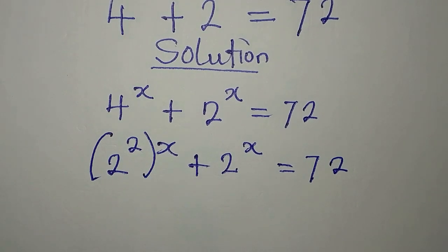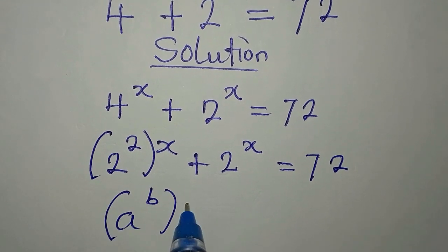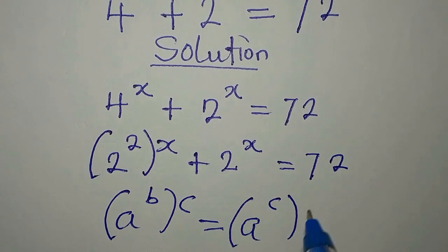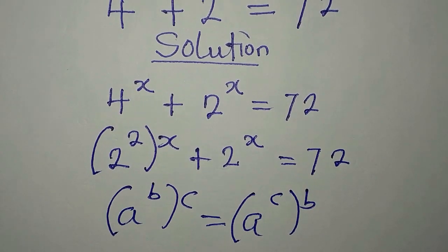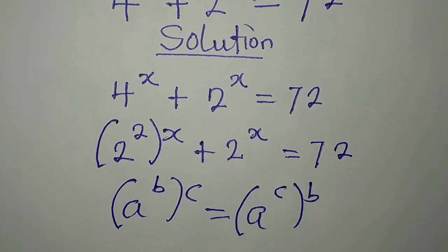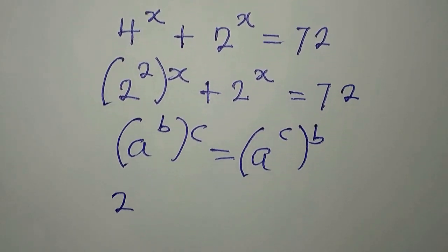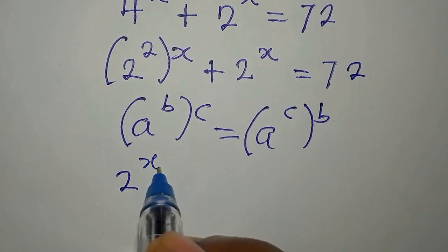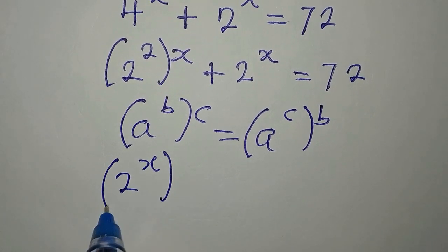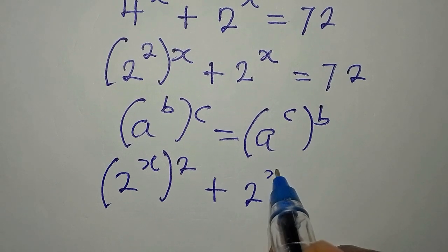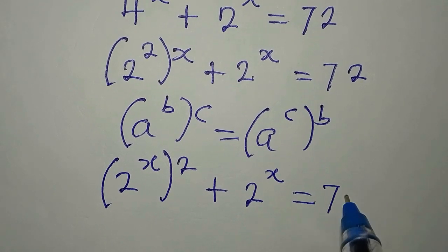Now we can always change the powers here, because if you have a to the power of b, to the power of c, this is the same thing as a to the power of c to the power of b. You can always change the position of the powers since we are multiplying. So this means that we can have 2 to the power of x, then to the power of 2, plus 2 to the power of x, equals 72.